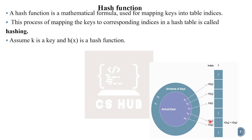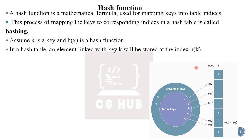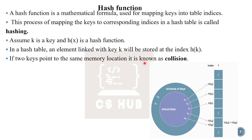Two different keys can map to the same location. If two keys point to the same memory location, it is known as a collision.